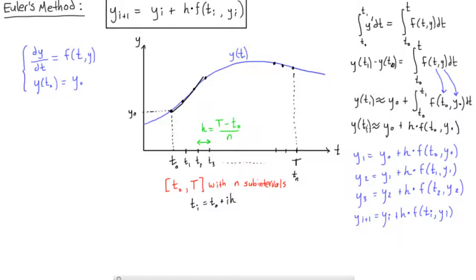And then again, we just finish off the integral, and we get y at t1, which would be here, this point, is approximately equal to y0 plus h, the width.